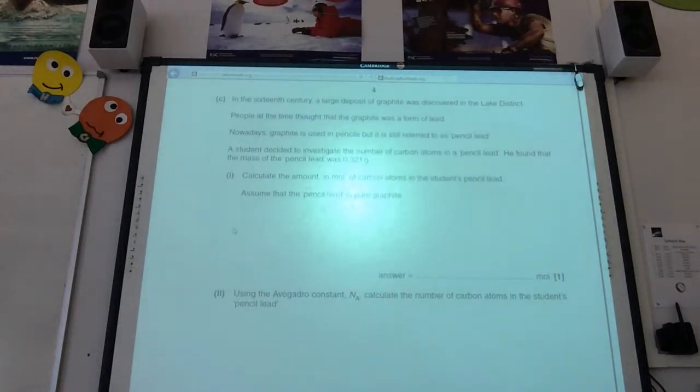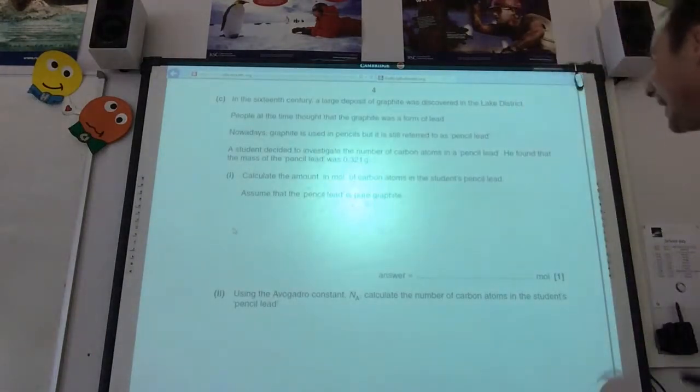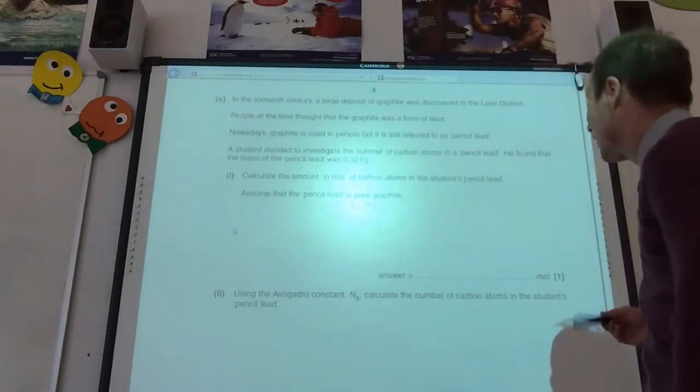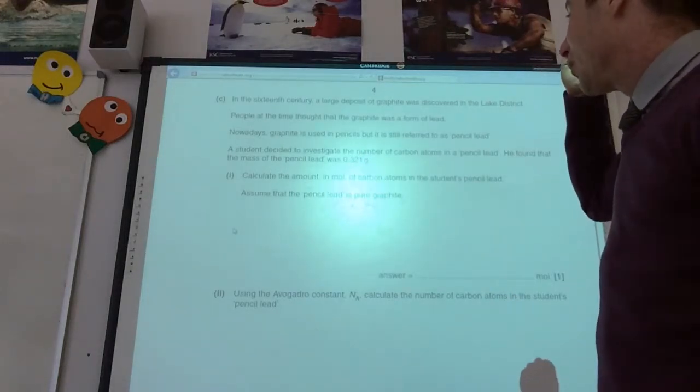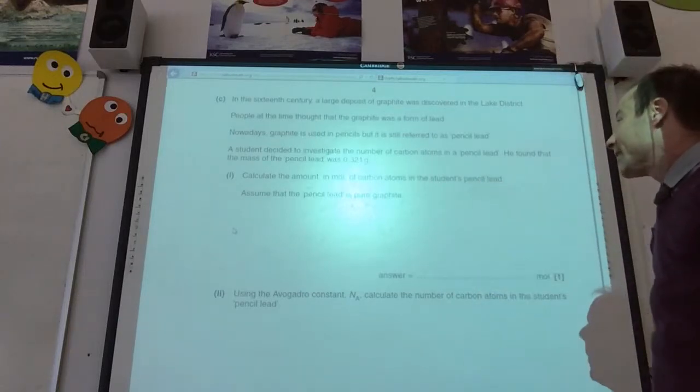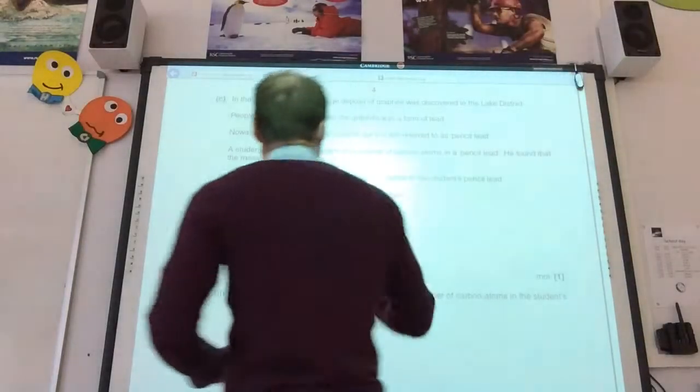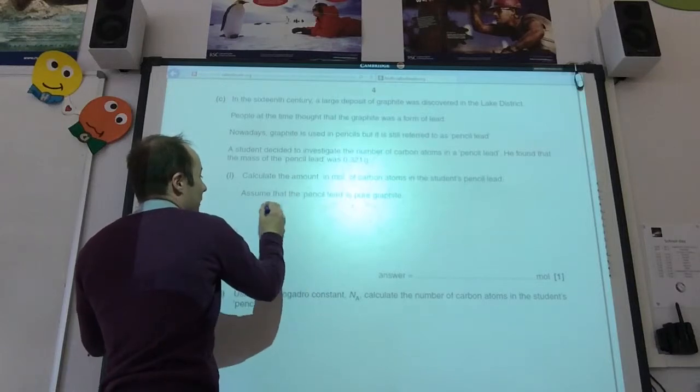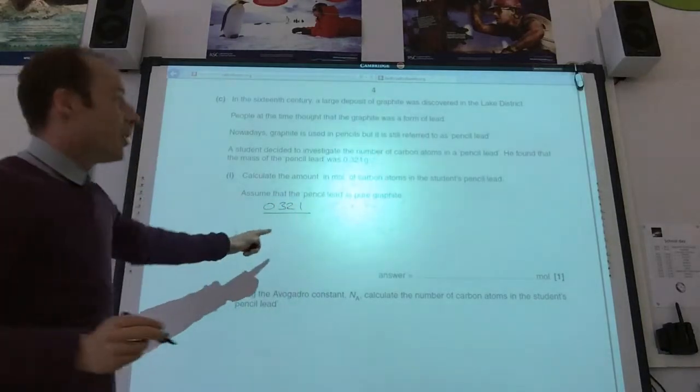Right, then they tell me a bit more about graphite being discovered in the Lake District. They thought it was lead. A student decided to investigate the number of carbon atoms in pencil lead. He found out the mass of pencil lead was 0.321 grams. Calculate the amount of moles of carbon atoms in the student's pencil lead. Okay, so, key thing, it's told me the number of grams I've got. So, it's going to be 0.321 divided by what?